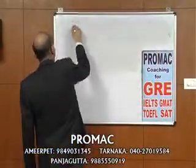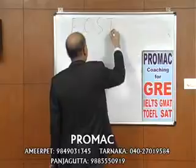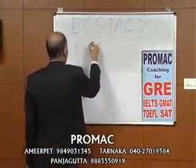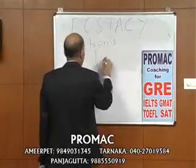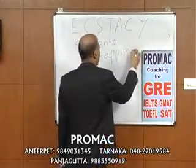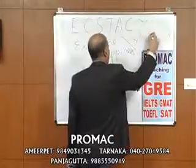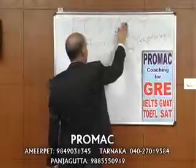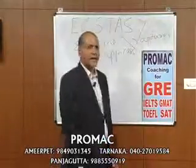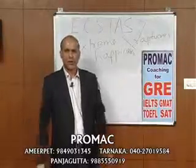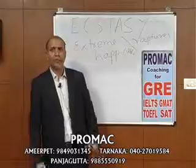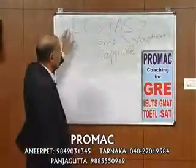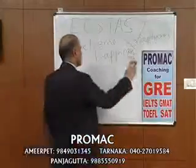The next word is ecstasy. The word ecstasy is taken in the meaning of extreme happiness, or what we can call rapture. That extreme level of happiness you achieve when you are doing something is called ecstasy. For example: 'I was ecstatic when I heard the news about my success.' 'I was ecstatic when I came to know that our team won that match.' Ecstasy is extreme happiness; ecstatic is the adjective meaning very, very happy.